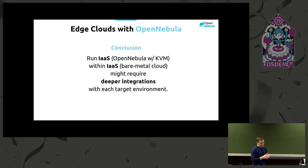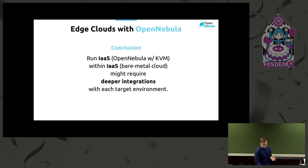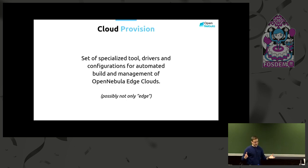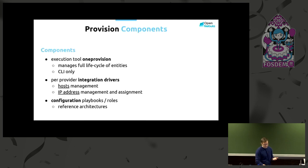The conclusion from this part is simple: if you take some existing infrastructure-as-a-service framework and try to run it within a different or the same infrastructure-as-a-service, you can expect things to work without problems. Now about the provisioning and how we build these clouds: OpenNebula comes with a set of specialized tools, drivers, and configurations which simply talk to the providers and build the entire cloud with a single command. Mainly we target edge clouds, but it doesn't have to be only edge clouds. It's one provision tool which manages the whole lifecycle of the edge cloud, and it's command-line only.